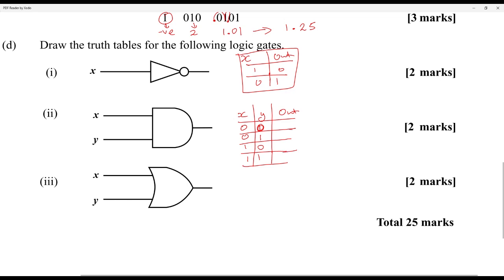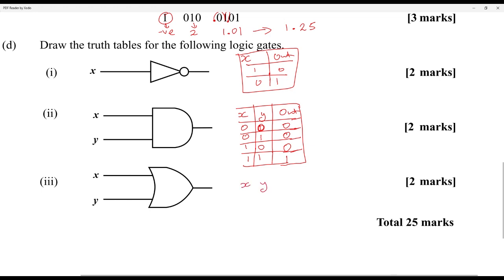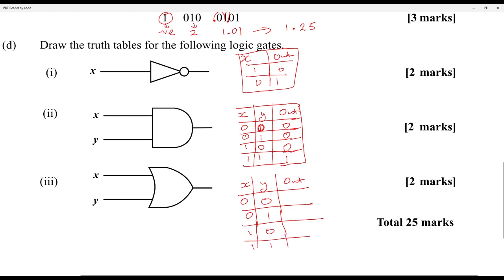For AND, only when both inputs are 1 do you get an output of 1. For the OR gate, draw the same table. Inputs: 0-0, 0-1, 1-0, and 1-1. The output is 1 if there is a 1 in either input. So 0-0 gives 0, but you get 1, 1, 1 after because there is a 1 somewhere in the input. Once there is at least one 1 as input, that will count.